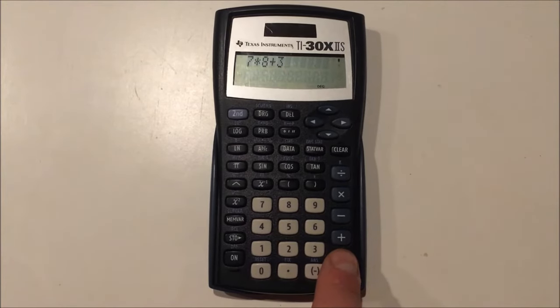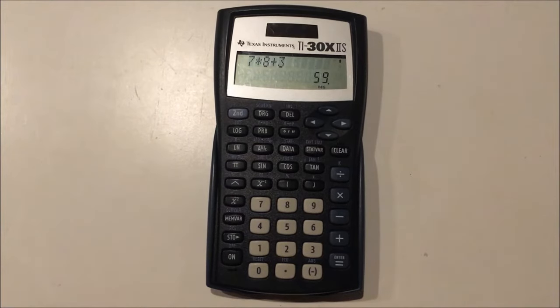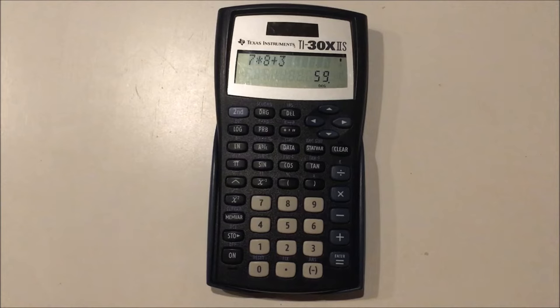We would press enter and we get 59. That's correct. 7 times 8 is 56 plus 3 is 59. So this calculator is doing that correctly.